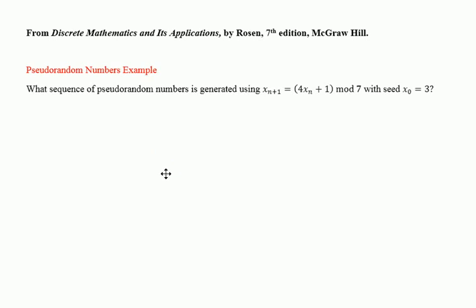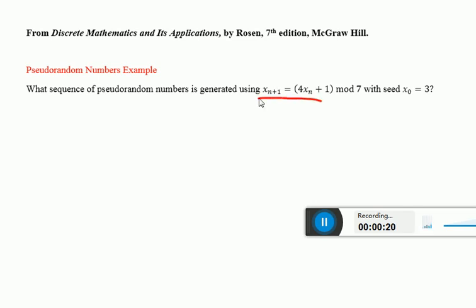We're going to go over an example of using modulus called pseudorandom number generation. The idea is that you're given some sort of modular equation, some formula by which to create what are called pseudorandom numbers.